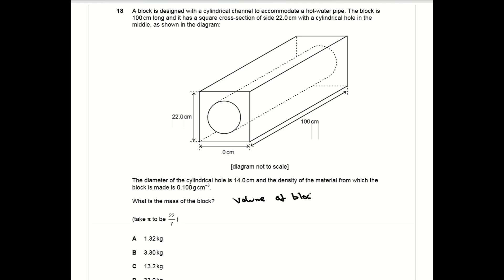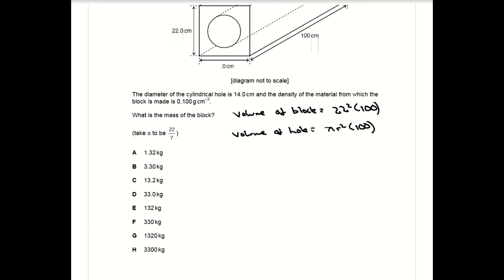Question 18 is a pretty standard density question. You've been given a cuboid shaped block with a cylindrical hole in the middle and you're asked to work out the mass of the block. You can work out the volume of the cuboid altogether by the cross-sectional area times the length, and similar sort of thing for the cylinder taking pi as 22 over 7. You can then subtract the volume of the cylinder from the volume of the cuboid to give you the volume of material that you have, and then multiply that by the density to give the overall mass.